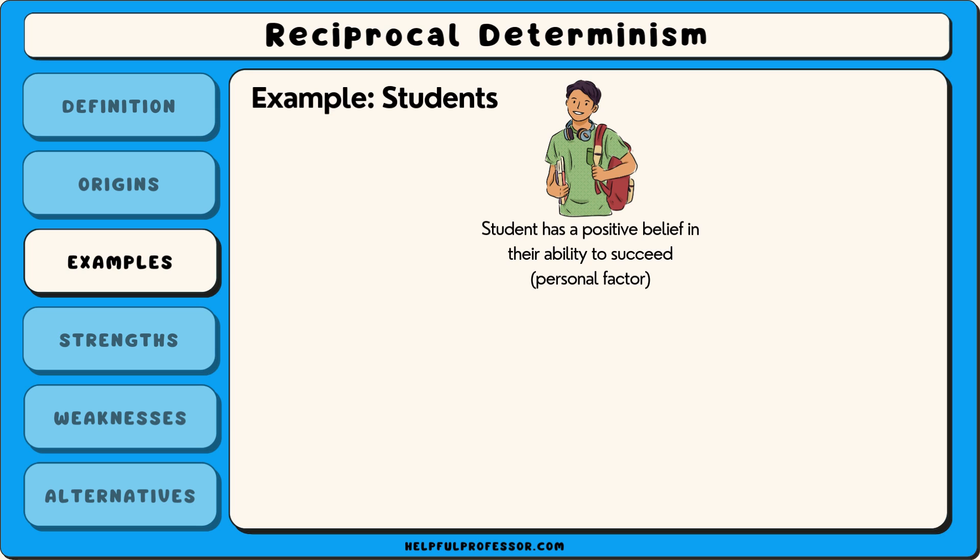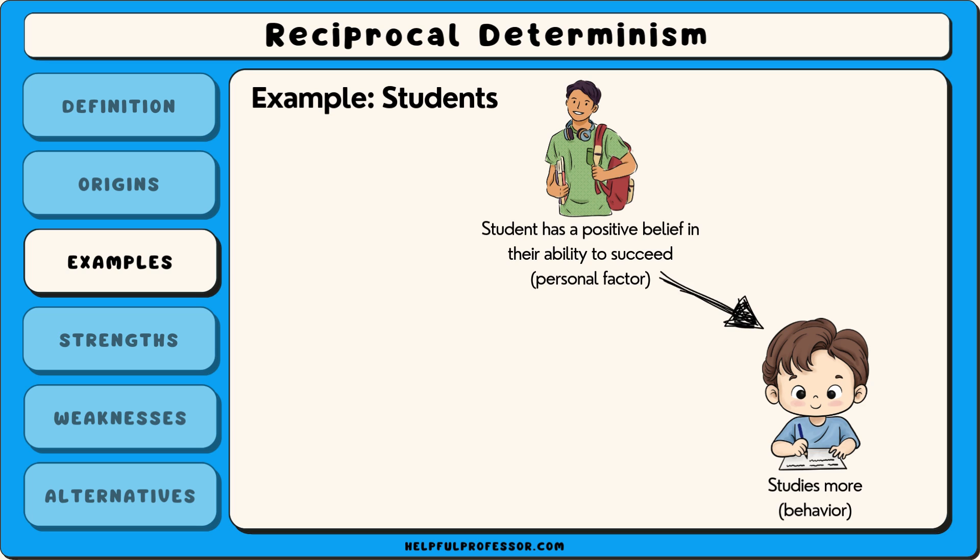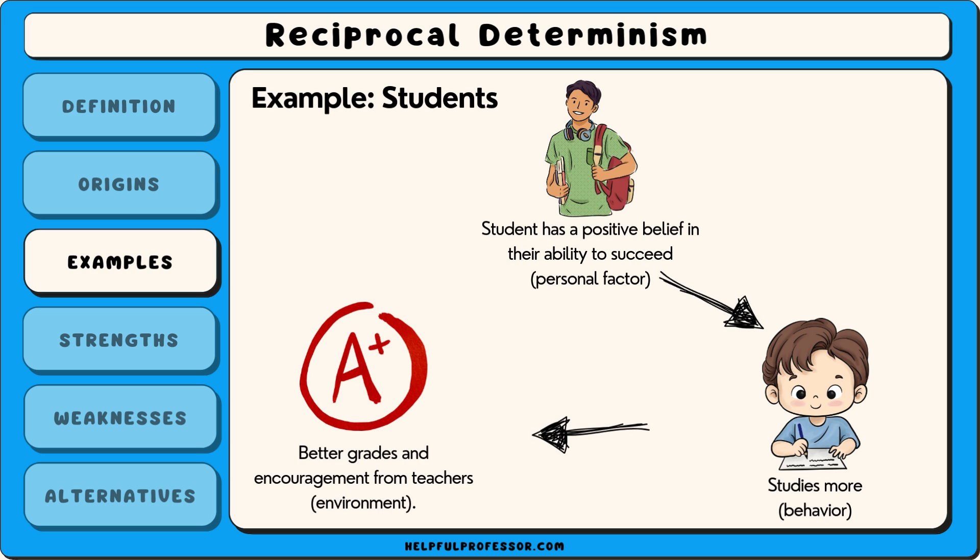An example of reciprocal determinism can be seen in how a student's study habits are influenced by this interaction. A student who has a positive belief in their ability to succeed — a personal factor — is likely to study more, which leads to better grades and encouragement from teachers. This positive feedback from the environment then reinforces the student's belief in their abilities, encouraging them to continue studying hard, and the cycle repeats.